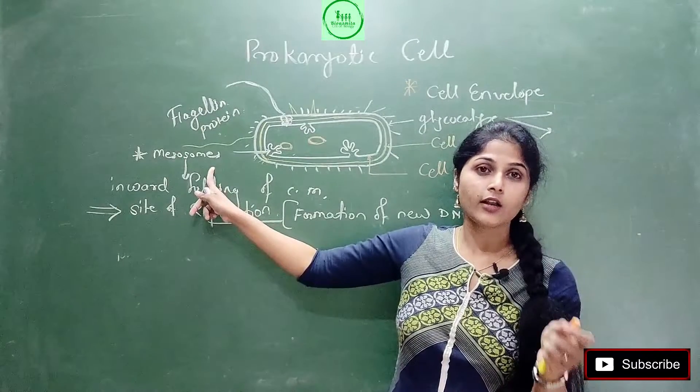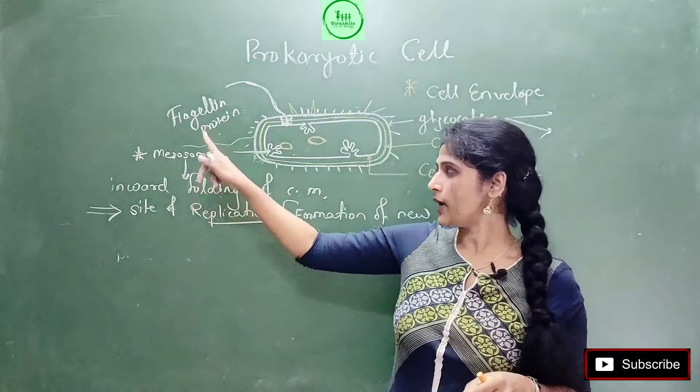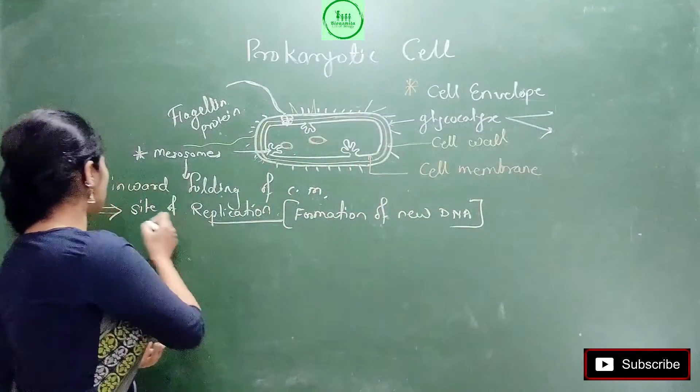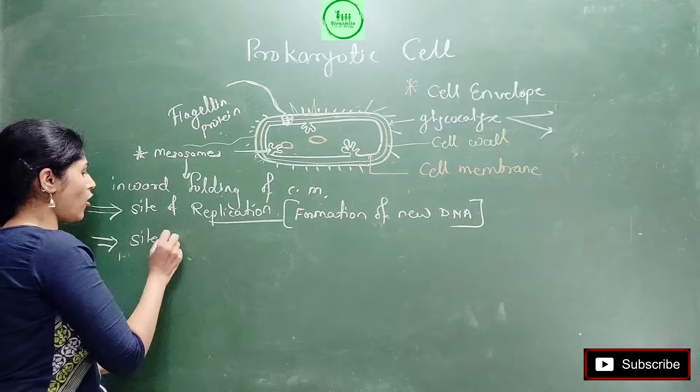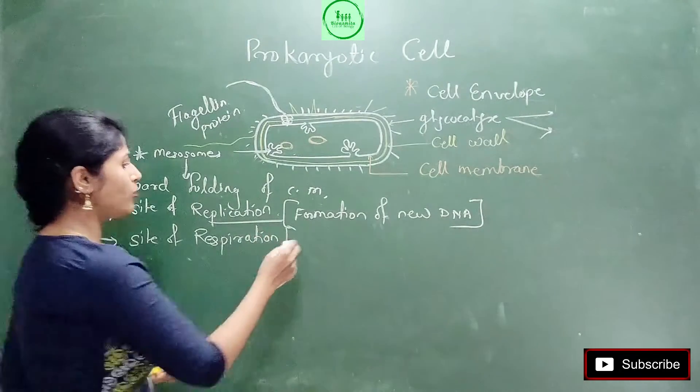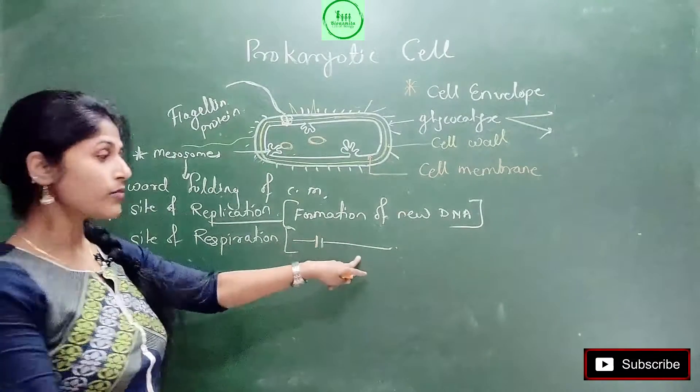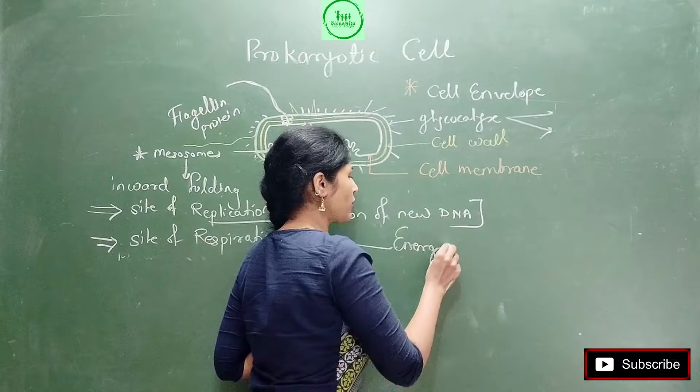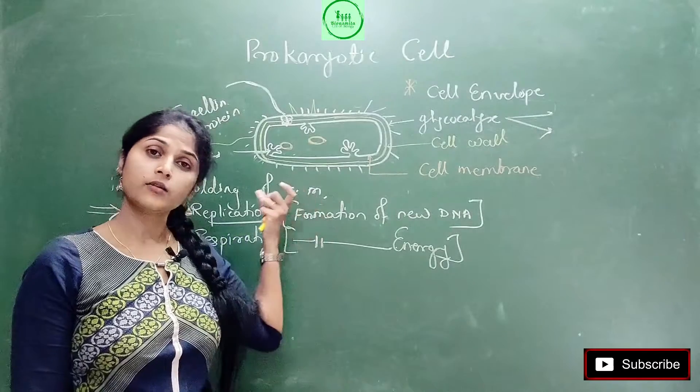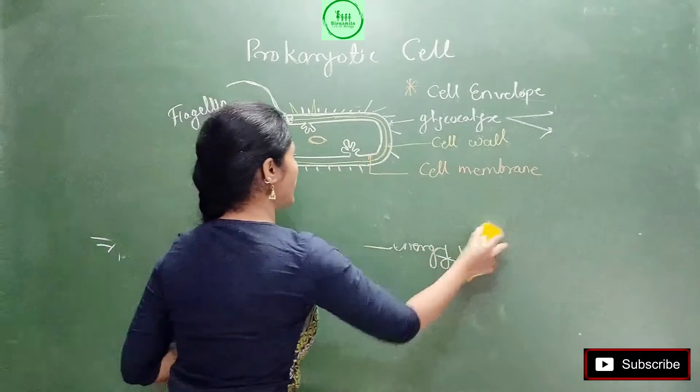The energy production of the cell is also in mesosome. Because in energy production there are some enzymes, some chemicals, some specific environment. Where is it? It is in mesosome. And that's right, the second most important role of this mesosome is it's a site of respiration. Every single statement of this mesosome is very important. What is meant by respiration? Process of formation of energy. In the body, the energy formation path is respiration. So replication and respiration - where are they happening? Mesosome is responsible.